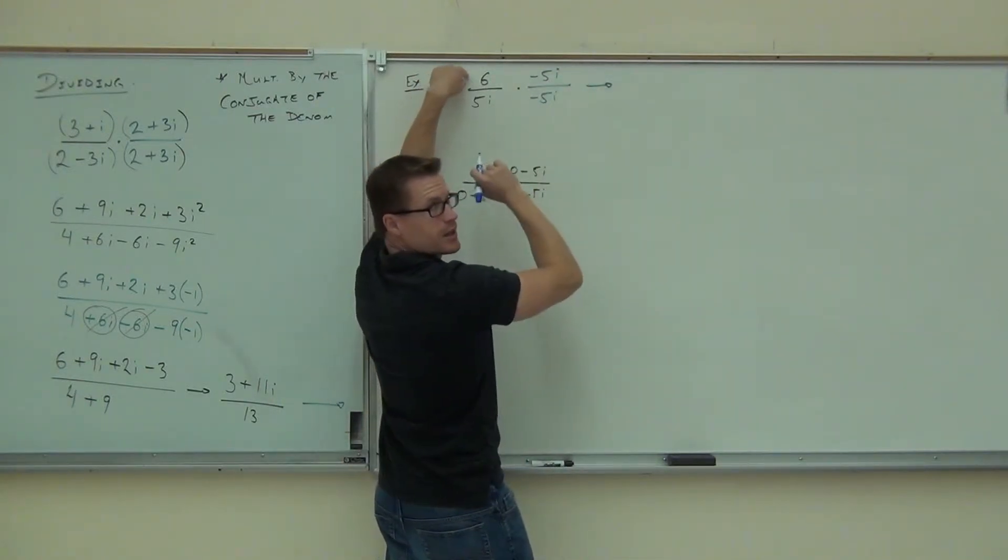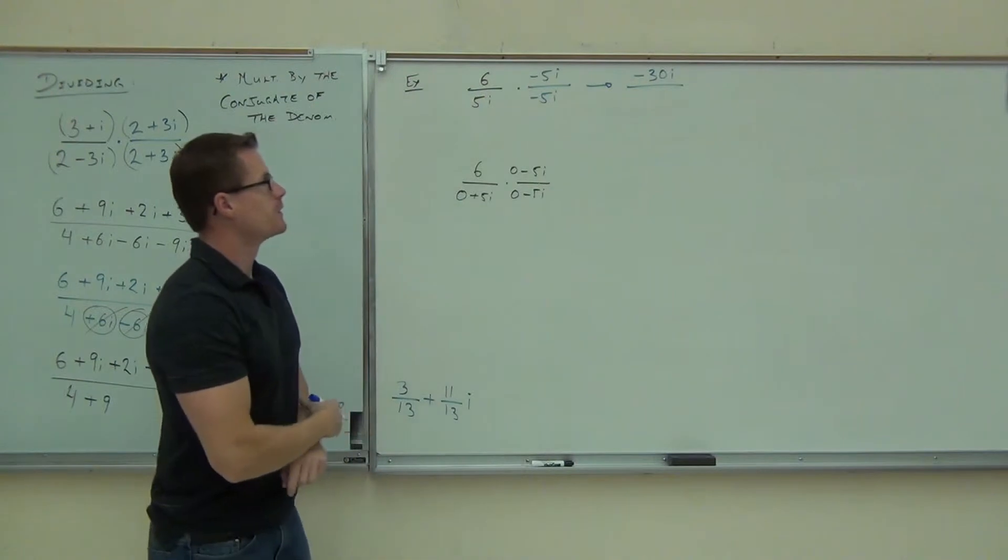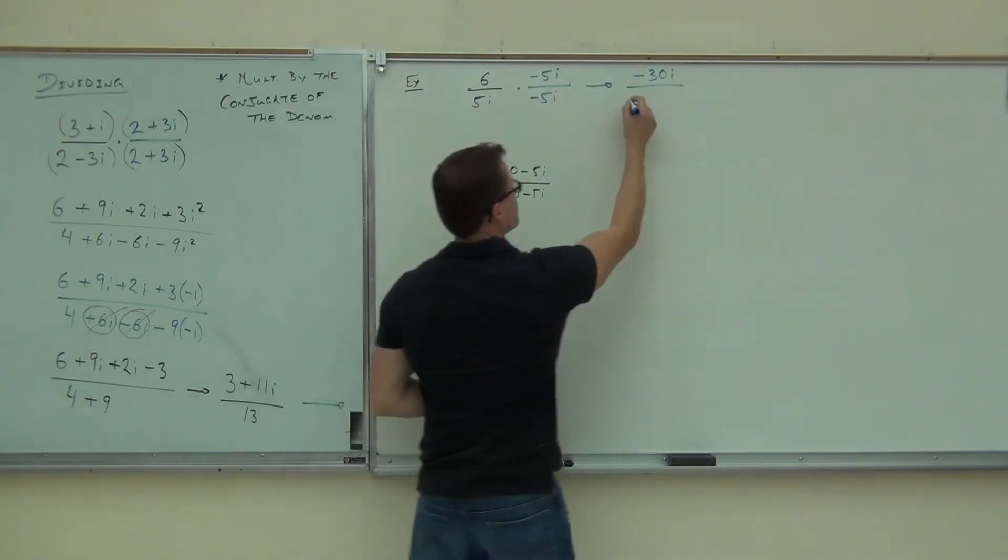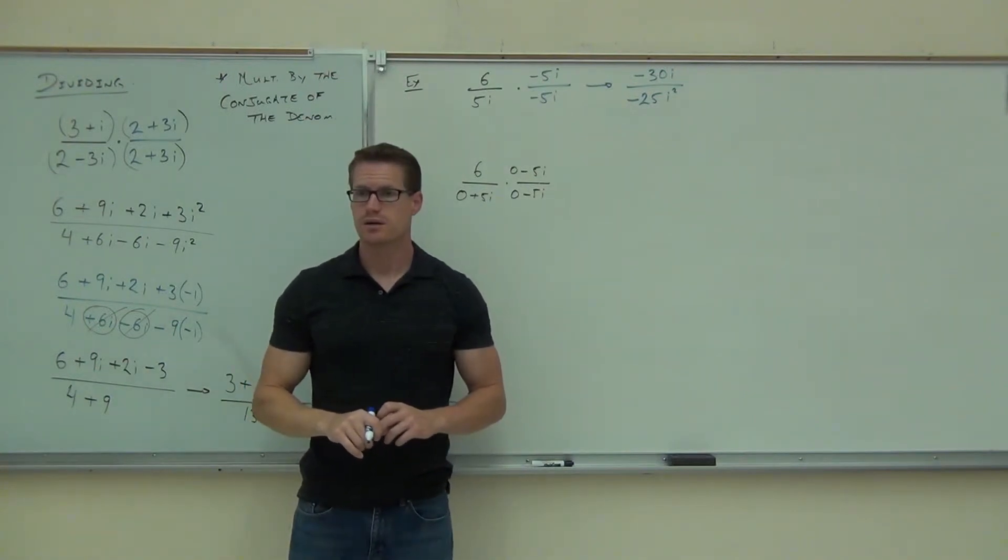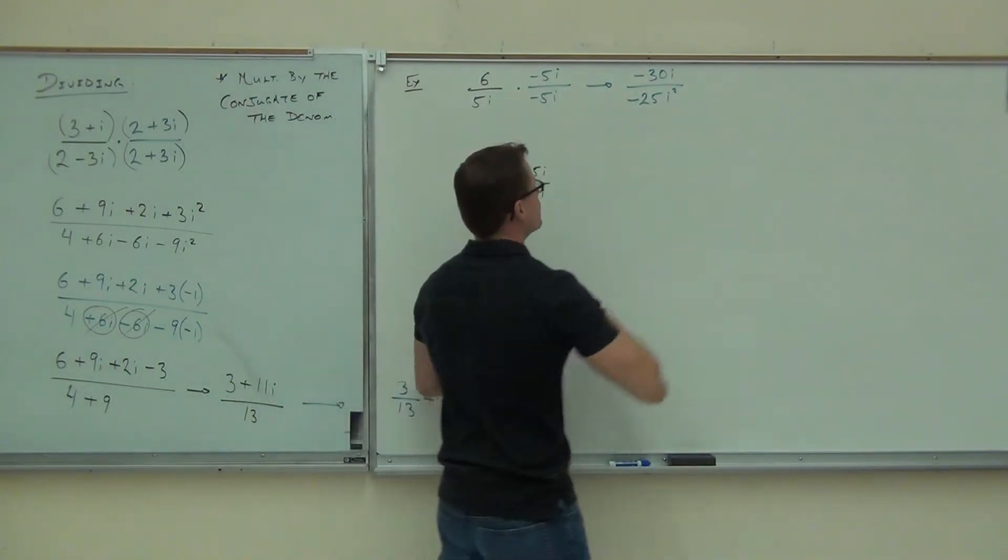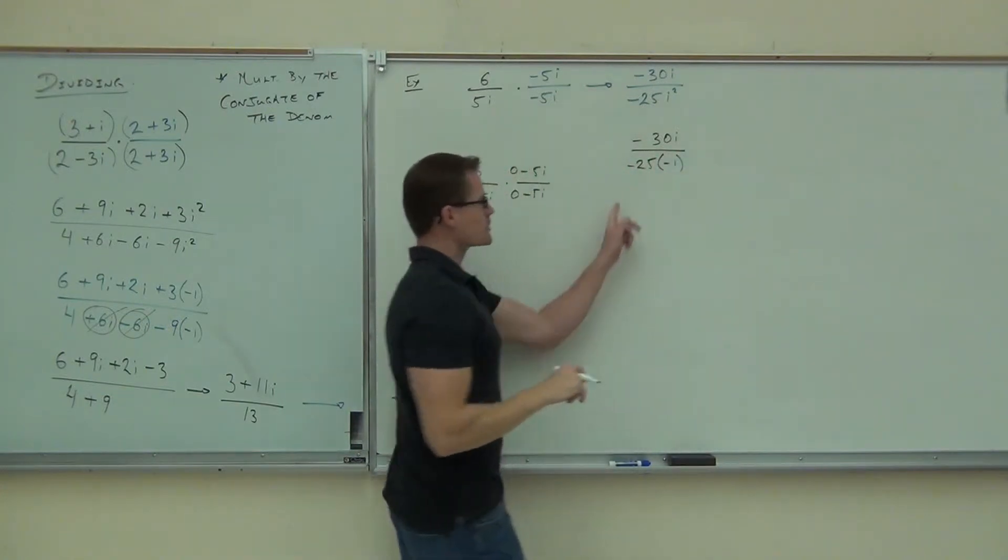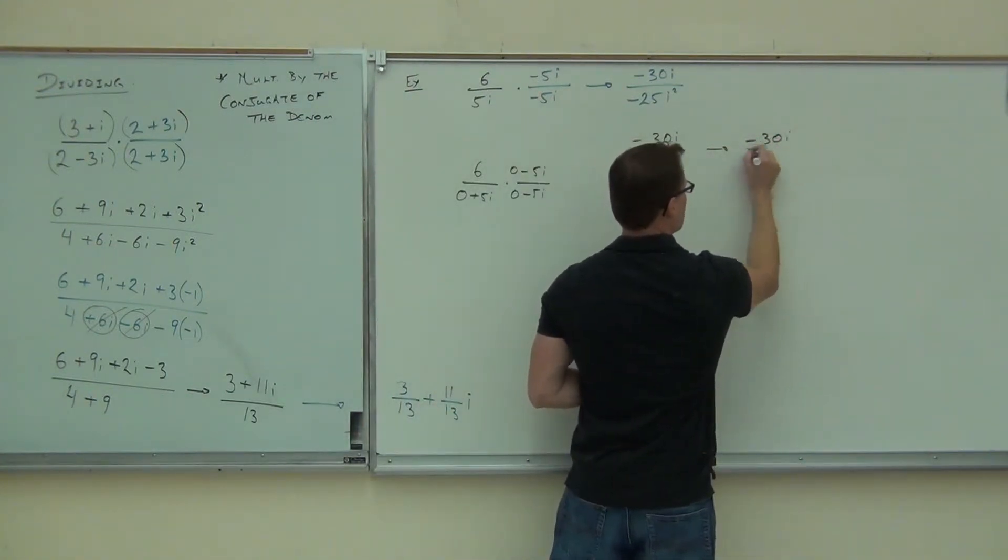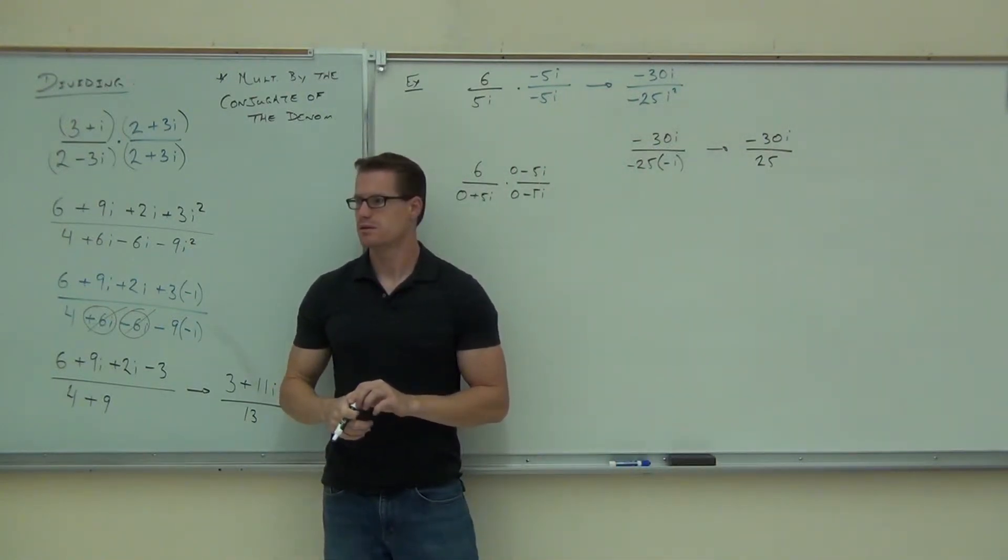See what happens here. On the numerator, how much am I going to get? Negative 30i. On the denominator, how much am I going to get? Negative 25i squared. Are we going to leave it i squared? No. Definitely not. i squared's how much? Negative 1. Can you simplify the fraction?